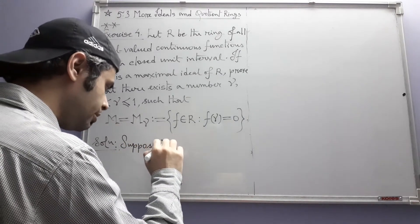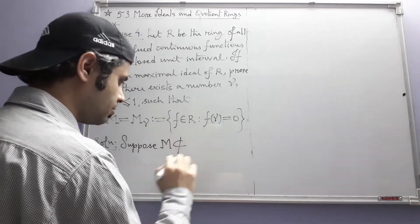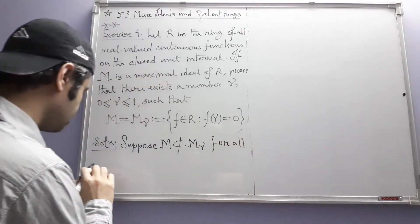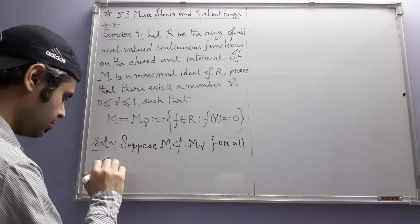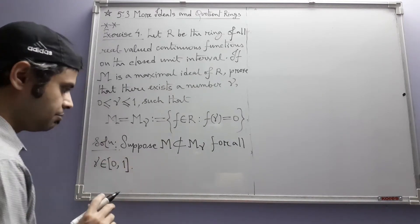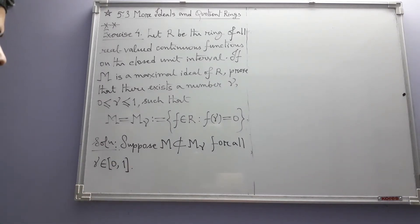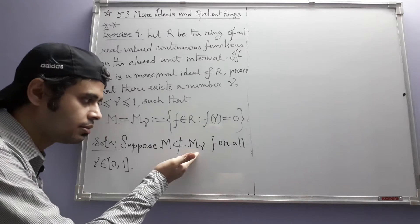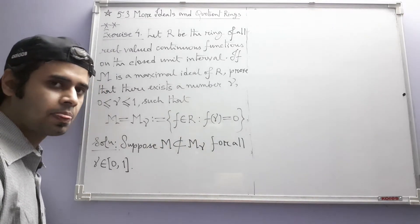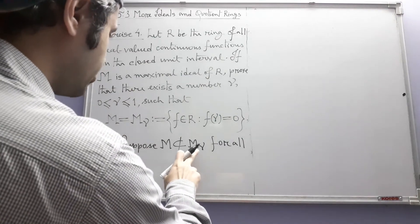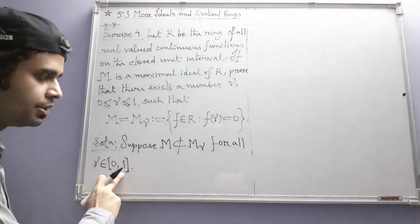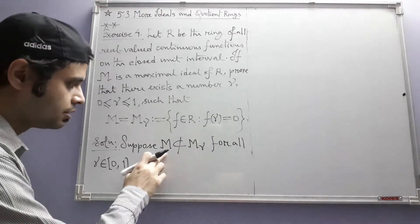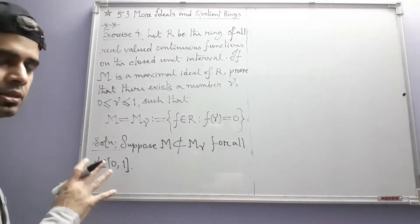Suppose m is not a subset of m_gamma for all gamma belonging to the closed unit interval. We start off with this supposition. What we are supposing is that the maximal ideal m is not contained in any m_gamma. That means for any gamma in this closed unit interval, there will be at least one element in m, which are functions, that is not in m_gamma, and that's what precisely we are going to do now.